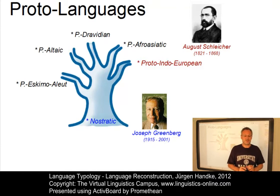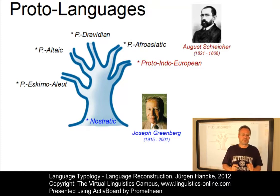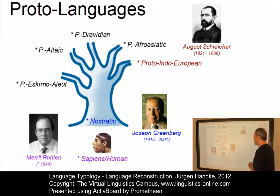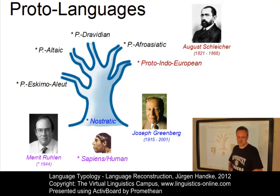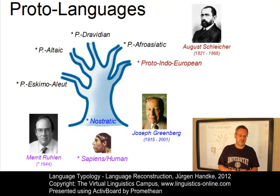The story can even be extended. Presupposing a monogenetic view of language origin — that is, a hypothesis that all languages have a common origin — the earliest proto-languages could have a common ancestor. According to Merit Rulon, a well-known typologist, it could be called proto-Sapiens. You might also want to use the terms proto-human, proto-world, or proto-terrestric, to name a few. But this is all very, very speculative.